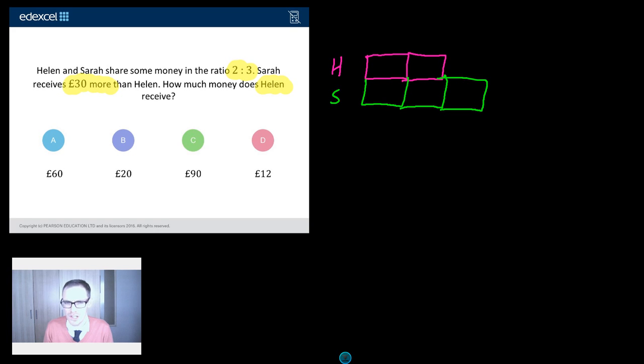Now, what do we know? Well, we know that Sarah receives 30 pounds more than Helen. So this extra bit that Sarah receives must be 30 pounds. Well, once we set it out like that, we're laughing here because all those parts are of equal size. This extra part that Sarah gets is 30.